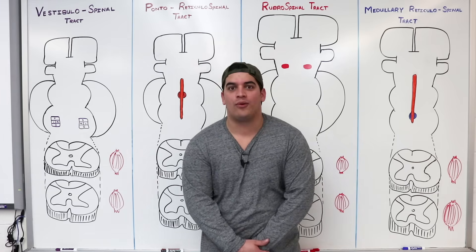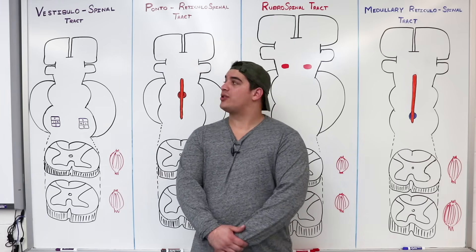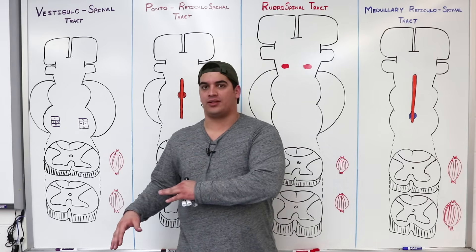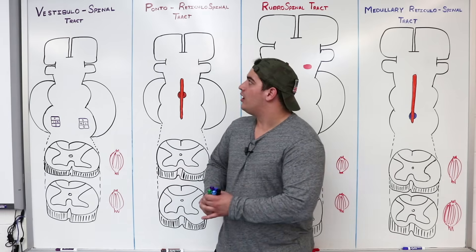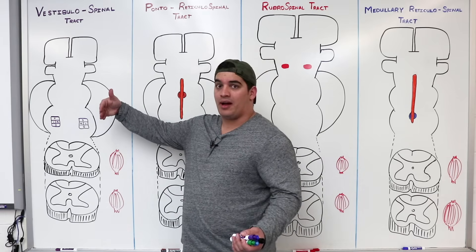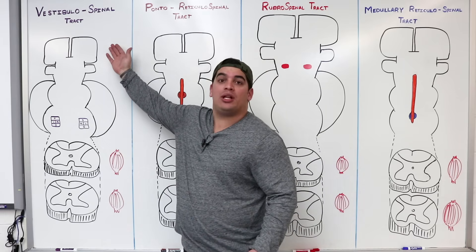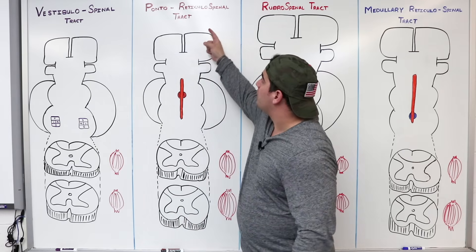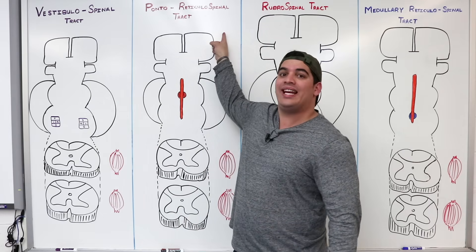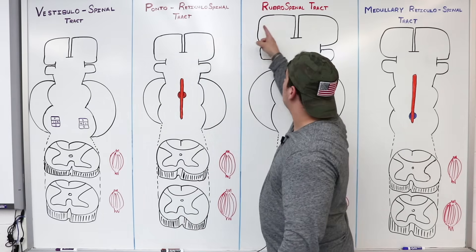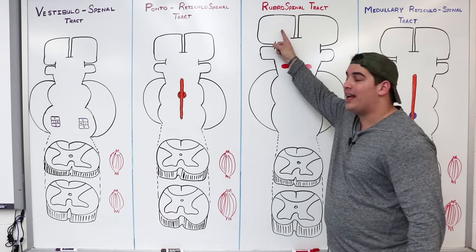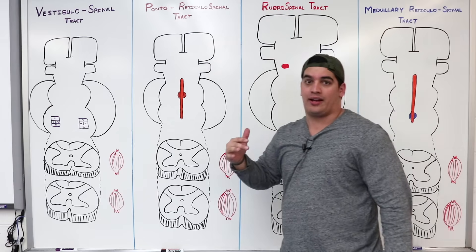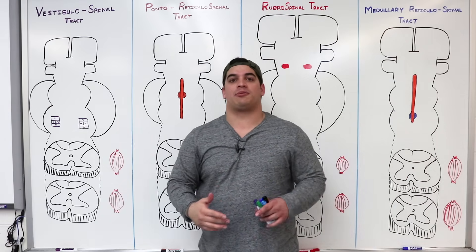Ninja Nerds, join us in this four-part series where we're going to talk about descending tracts. We're going to talk about four individual ones in four separate videos. The first one is the vestibulospinal tract. The next video we'll cover the pontoreticulospinal tract, then the rubrospinal tract, and finally the medullary reticulospinal tract. Let's go ahead and start on the vestibulospinal tract.